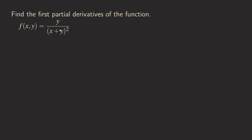Instead of having a quotient, we can move it up and have a negative exponent, which gives us something nicer. You can use the quotient rule if you prefer. Let's move it up so we don't need to use the quotient rule — we can use the product rule depending on which variable we're differentiating with respect to. So we now have y times (x+y) to the negative two. Now we're ready to differentiate. So fx(x,y): we are differentiating with respect to x.